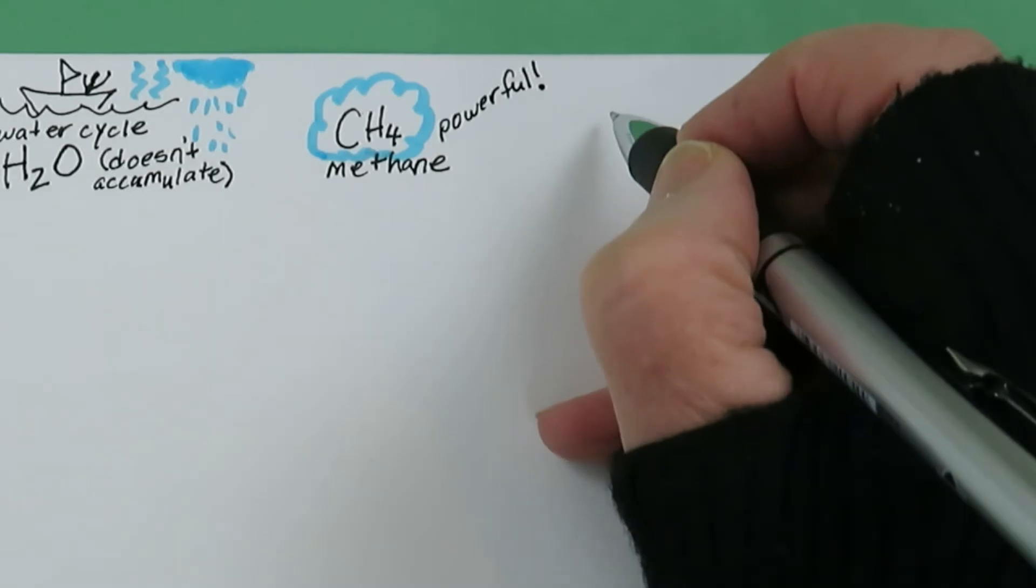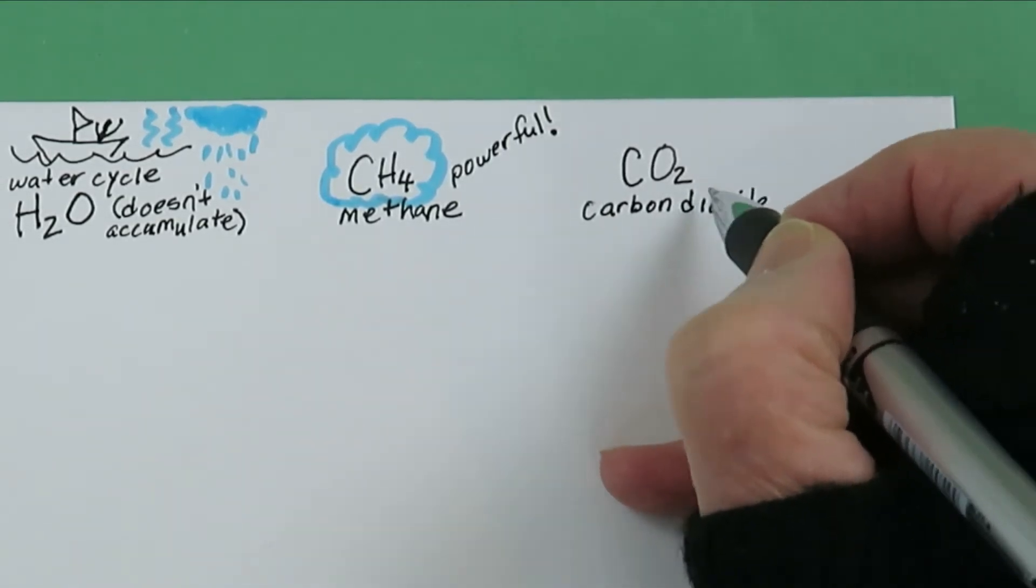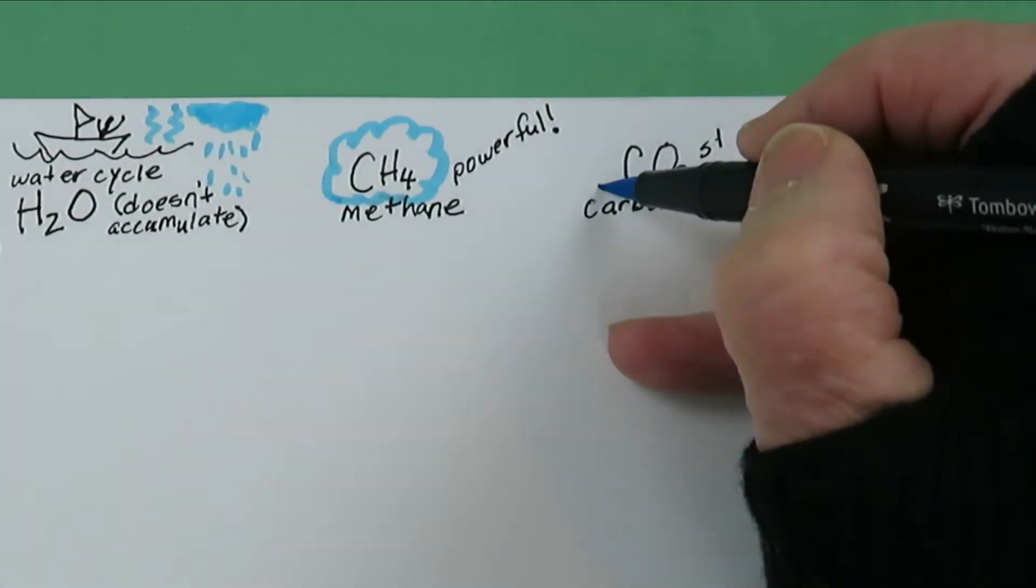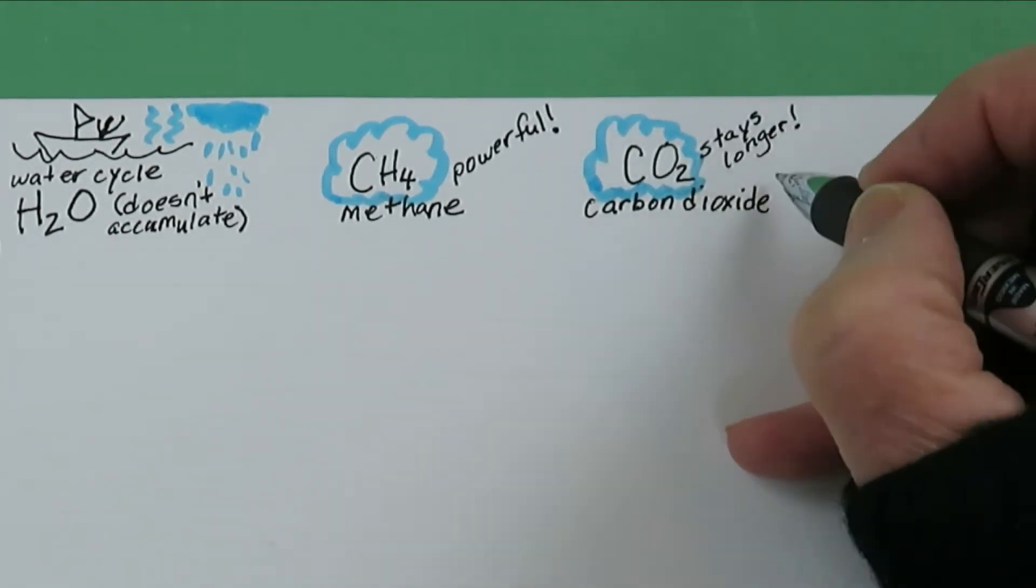So we'll be talking a lot about CO2. Once we put it in the air, it stays around for 100 years or more. And we've put a lot more CO2 into our atmosphere than methane.